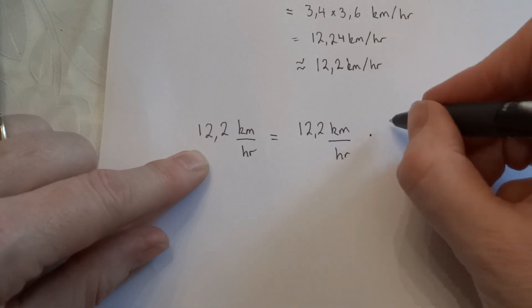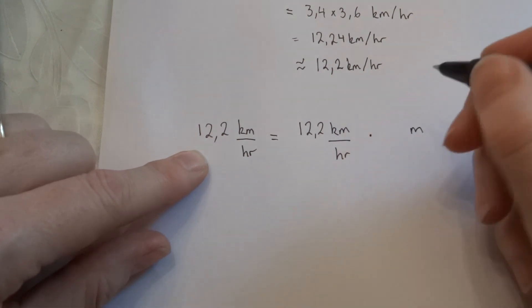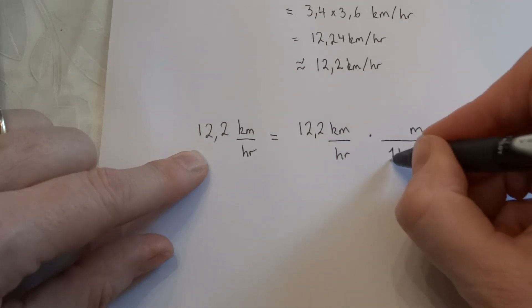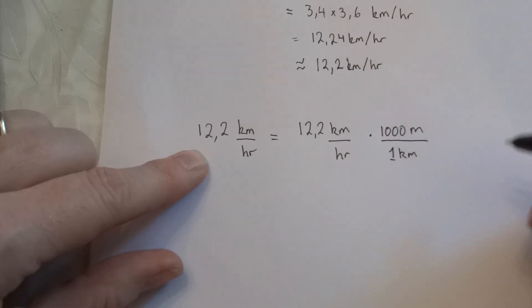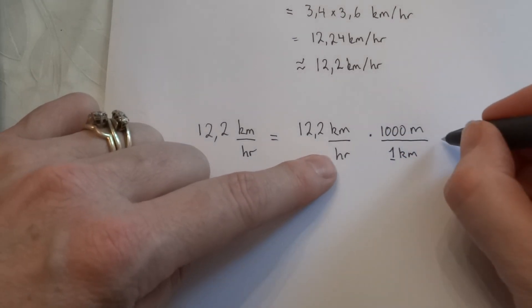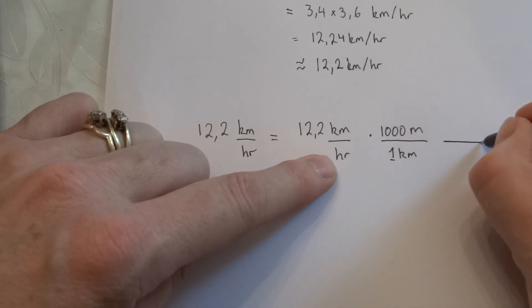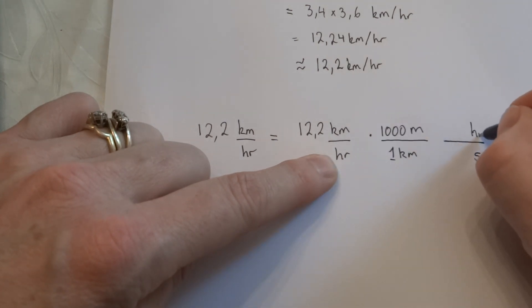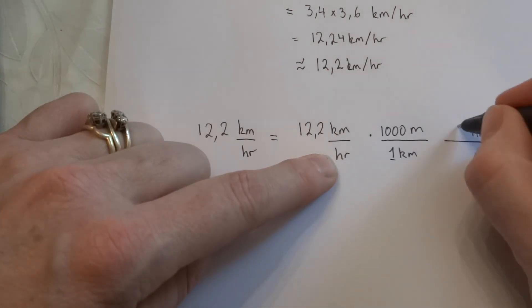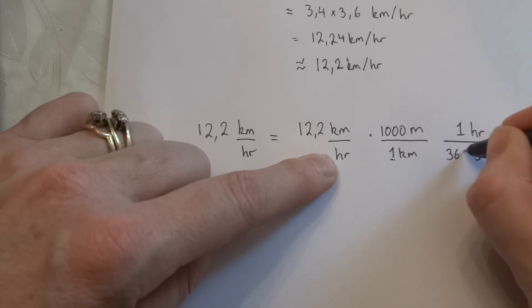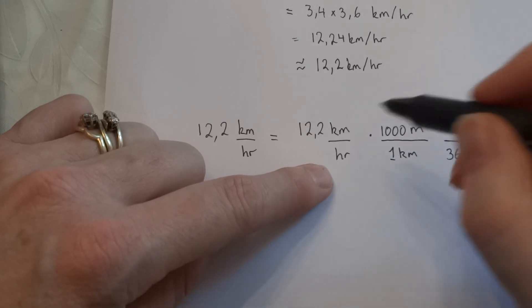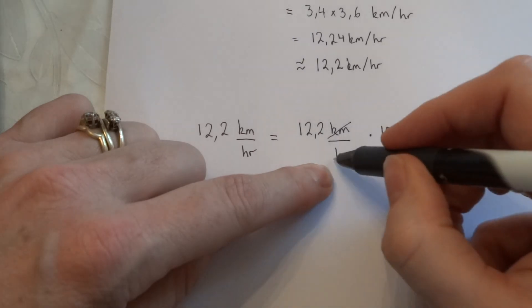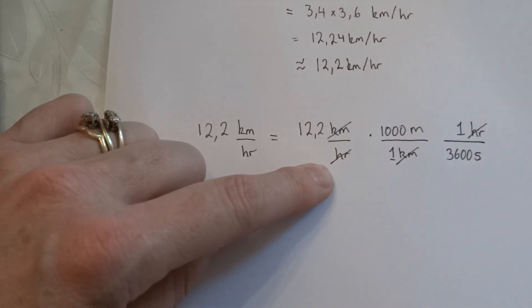On the top here we'd like meters, and on the bottom we'd like kilometers so that we can cancel. We know that 1 kilometer is the same as 1,000 meters on the top. And then instead of hours down here, we would like seconds, and we'd like hours on the top here so that we can cancel. We know that 1 hour is the same as 3,600 seconds. Now the kilometer units cancel with each other, and the hour units cancel with each other.